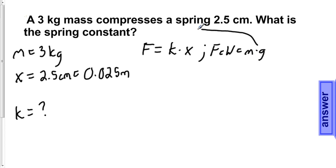We can substitute this into Hooke's Law to get mass times acceleration due to gravity is equal to spring constant k multiplied by the distance the spring is compressed, x.